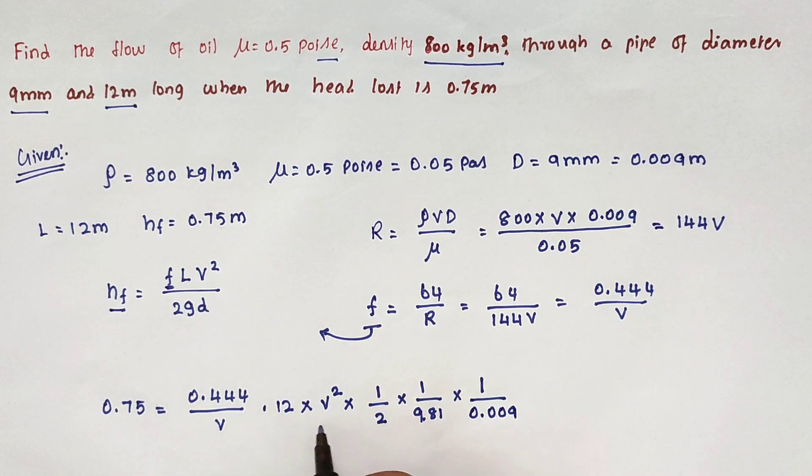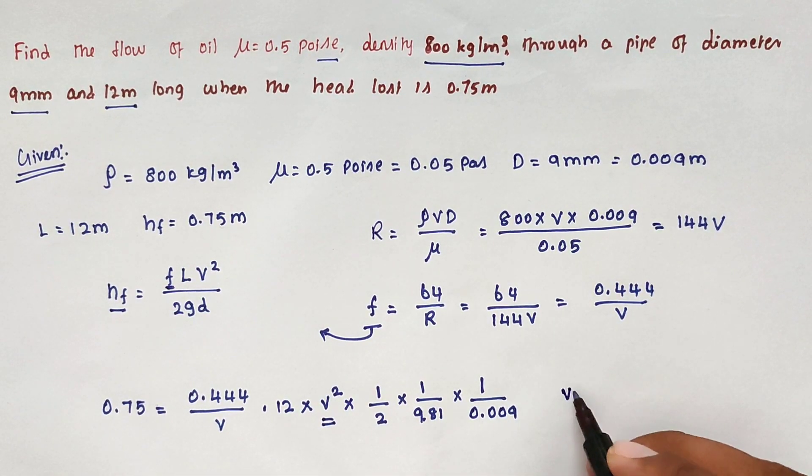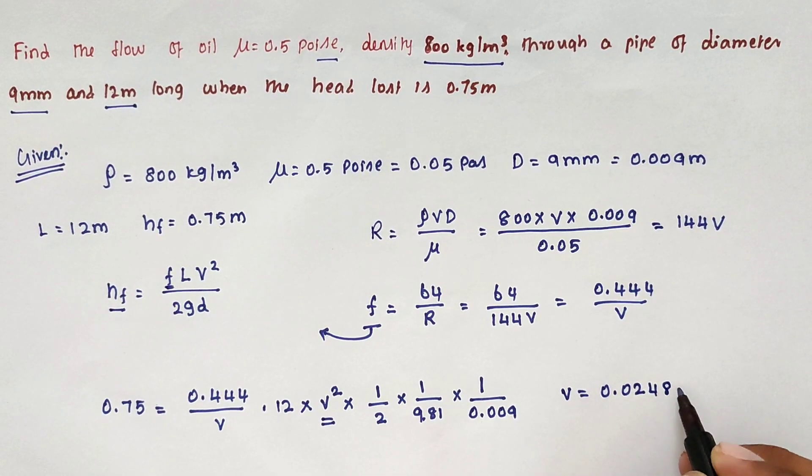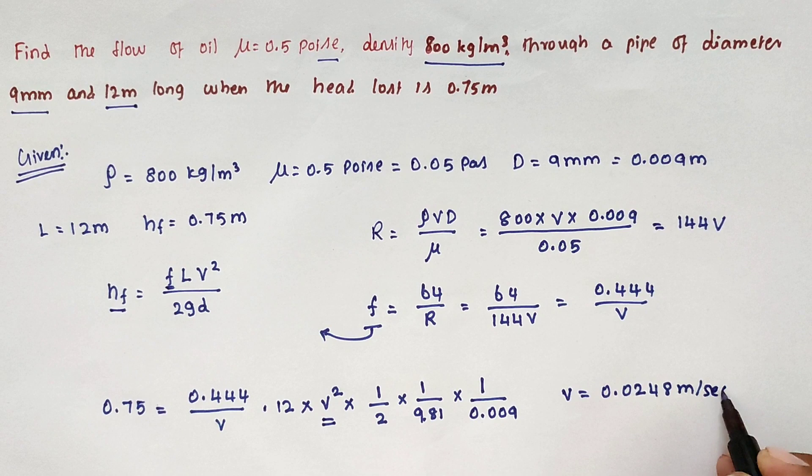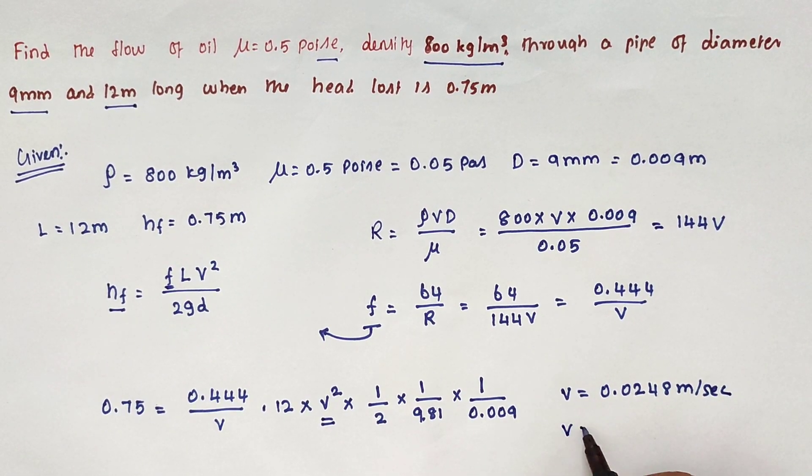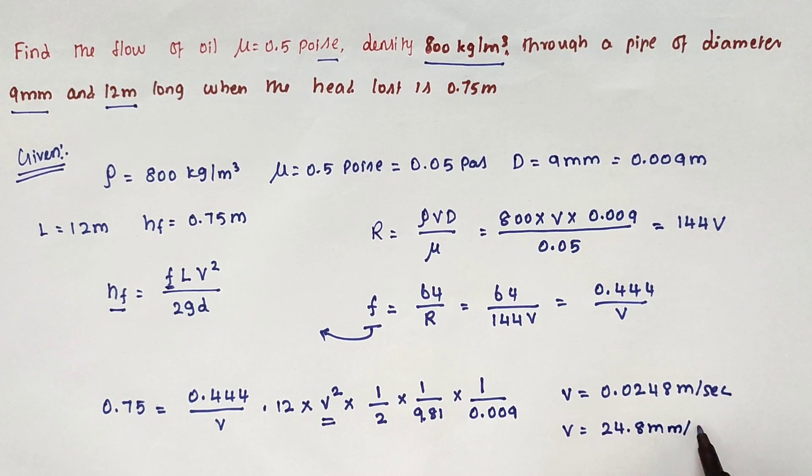From that only unknown is V. Solving this we got the value of V equal to 0.0248 meter per second, or we can call it 24.8 mm per second.